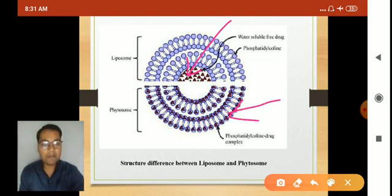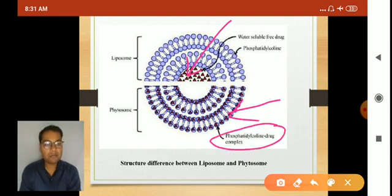Whereas in case of phytosomes, there are complexes made up of phospholipid—phosphatidylcholine—and drug. Phosphatidylcholine and drug complexes are there in phytosomes, whereas water-soluble free drug is encapsulated in the aqueous core and surrounded by the phosphatidylcholine in case of liposomes. So this is the basic difference between liposome and phytosome structure.